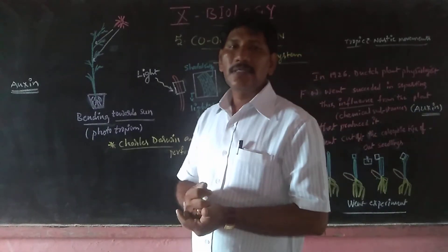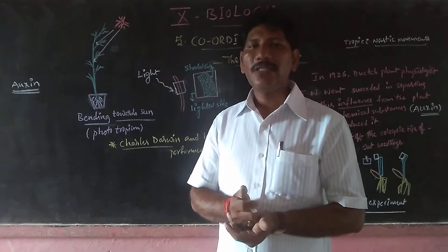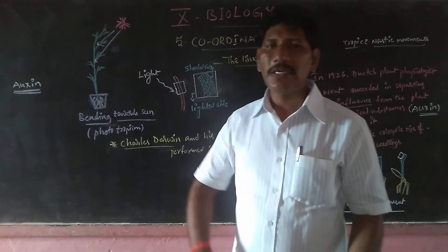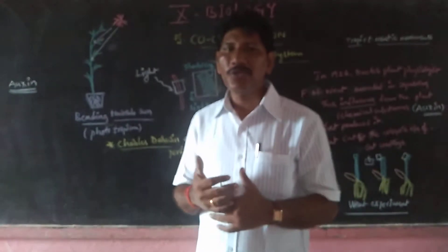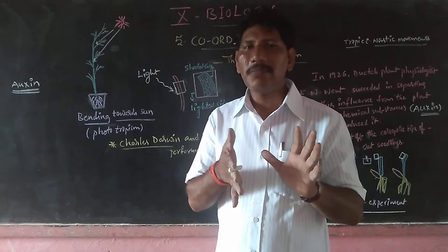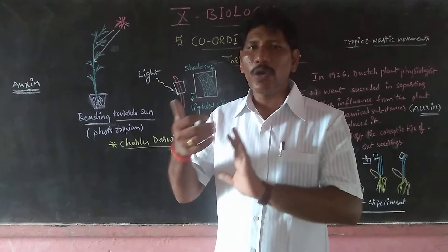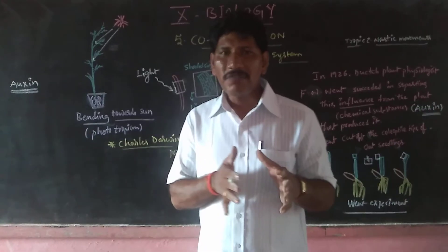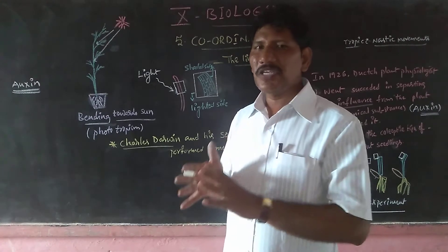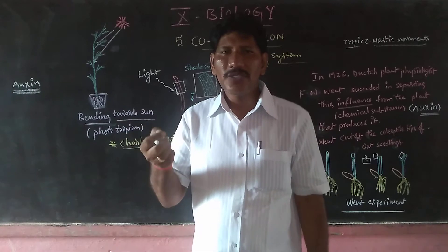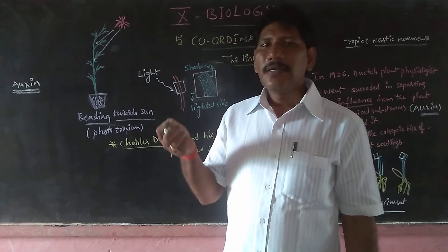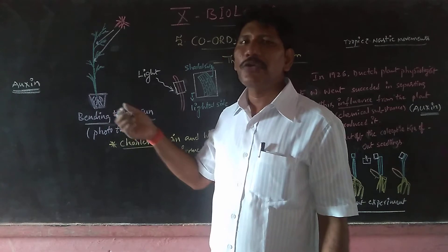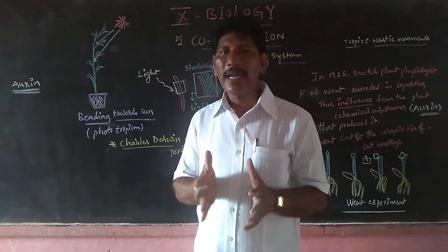Good afternoon everybody. Welcome to 10th Biology. We are almost at the end of the fifth chapter, Coordination. So far we discussed about how living organisms, especially animals, can control and coordinate activities with the help of neural and chemical coordination. Now regarding plant physiology, plant coordination — the plants can control their activities with the help of hormones called phytohormones.